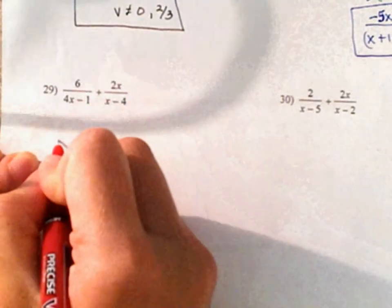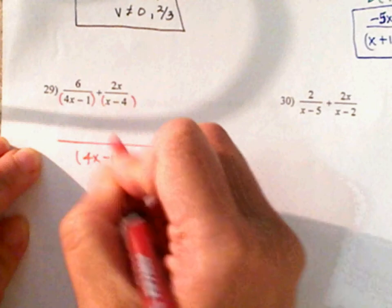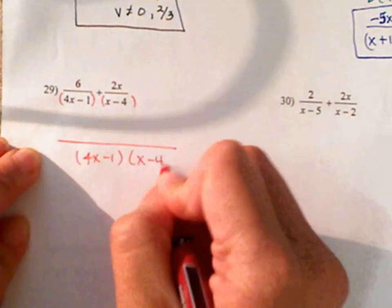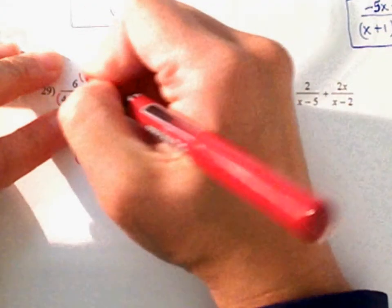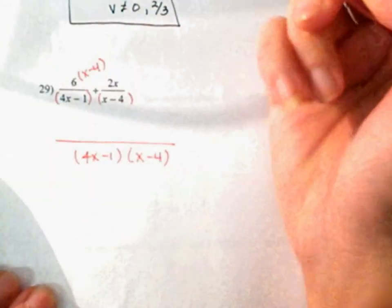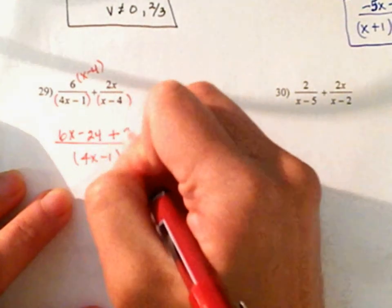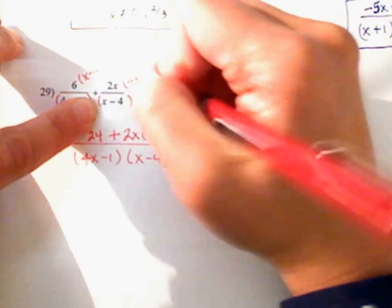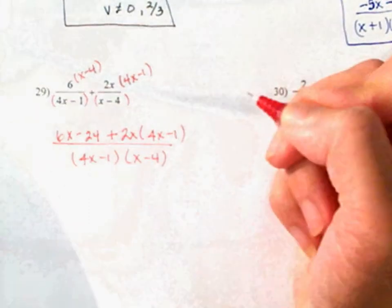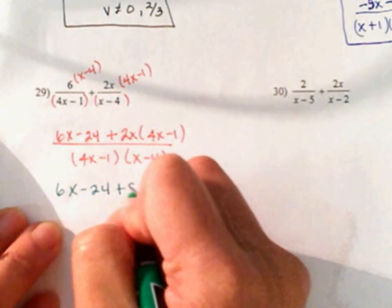Number 29. I'm going to put parentheses around this. So guess what you have? 4x minus 1, and x minus 4 — not written, so I'm going to write x minus 4. Compare: you've got 4x minus 1, I'm missing x minus 4. So I'm going to multiply my numerator to keep it the same. 6 times x is 6x. 6 times negative 4 is negative 24. Plus 2x — what are you missing from this denominator? 4x minus 1. Let's go ahead and multiply it first. So 6x minus 24 plus 8x squared minus 2x, all of that over 4x minus 1 times x minus 4.